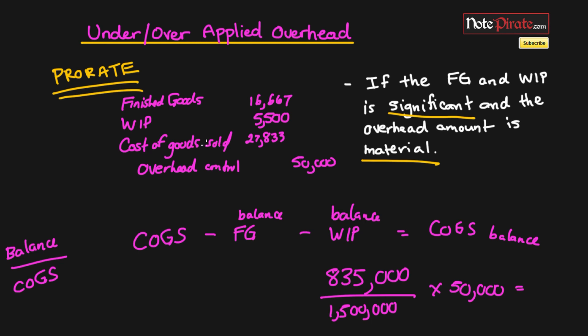So those were the two options: you can either write off the under or over applied amount directly to cost of goods sold, or you can prorate it among cost of goods sold, work in process, and finished goods based on their relative balances.